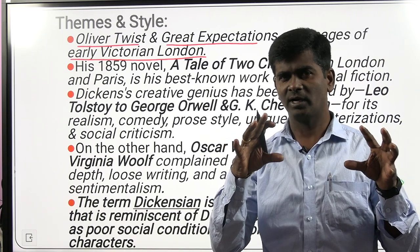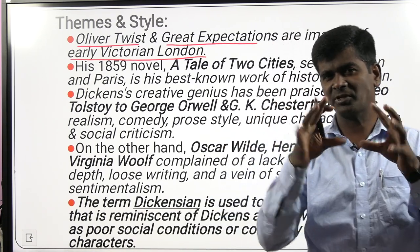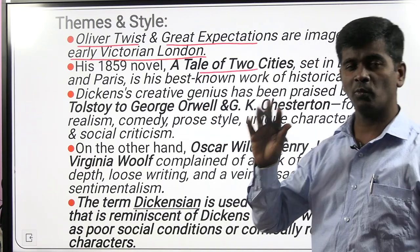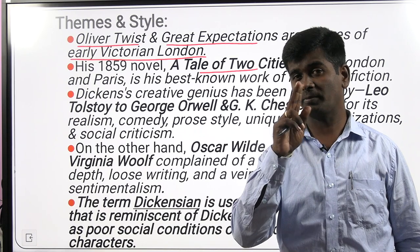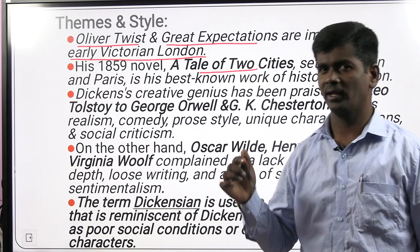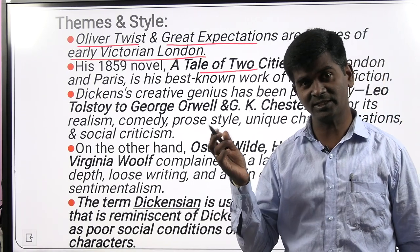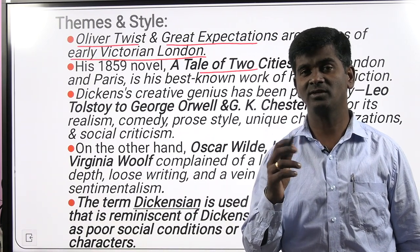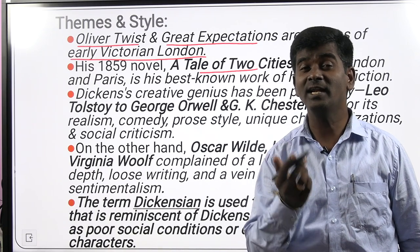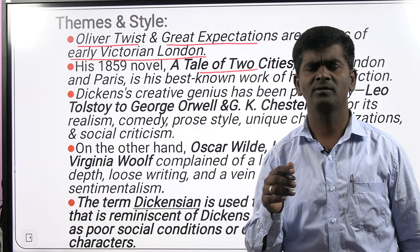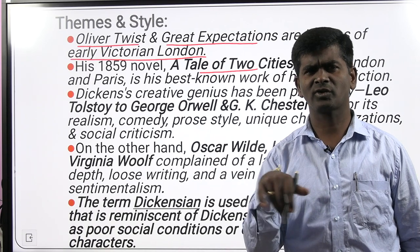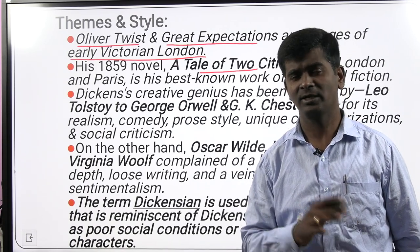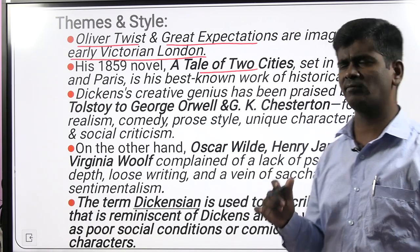These two novels give a clear picture of London. His novel A Tale of Two Cities — the two cities being Paris and London — is a historical novel. It deals with the French Revolution: how common people revolted against the French rulers, how they killed all the family members of the aristocratic dynasty. That is the story of A Tale of Two Cities — a wonderful historical novel.